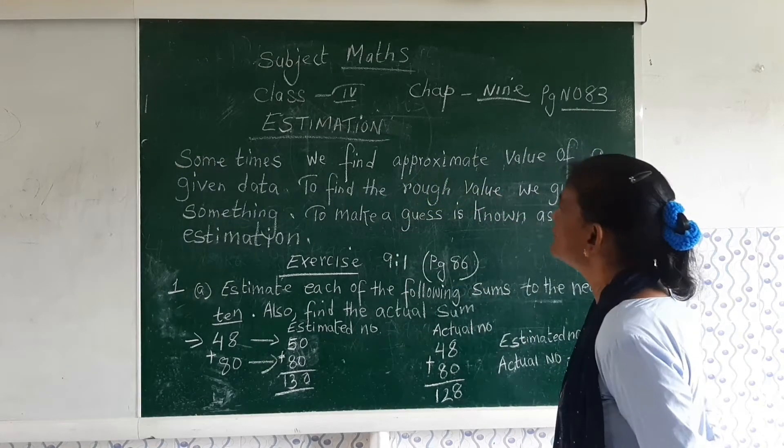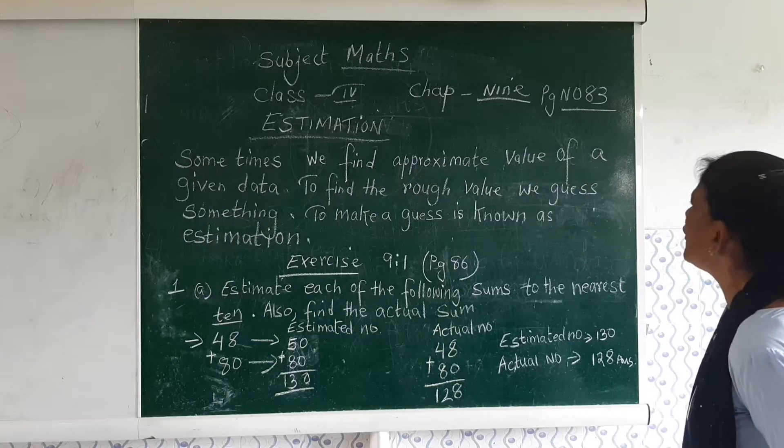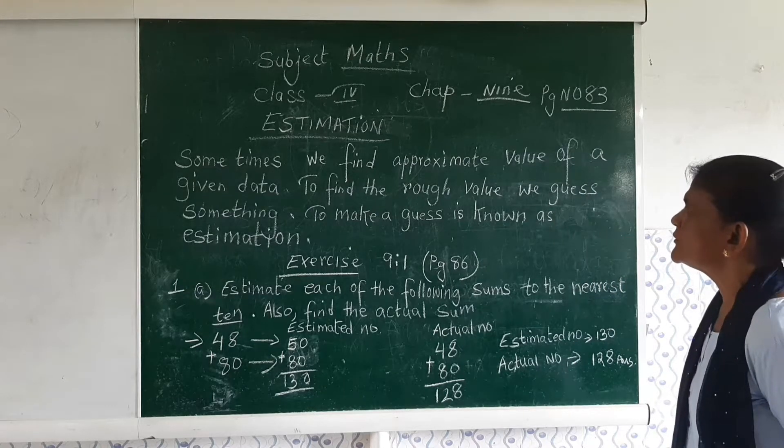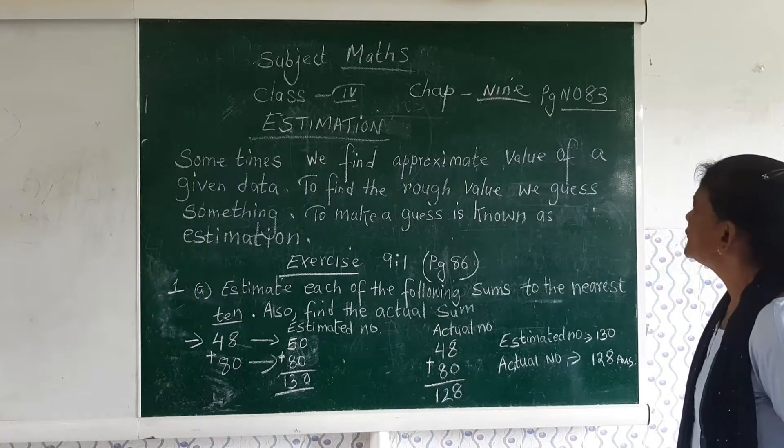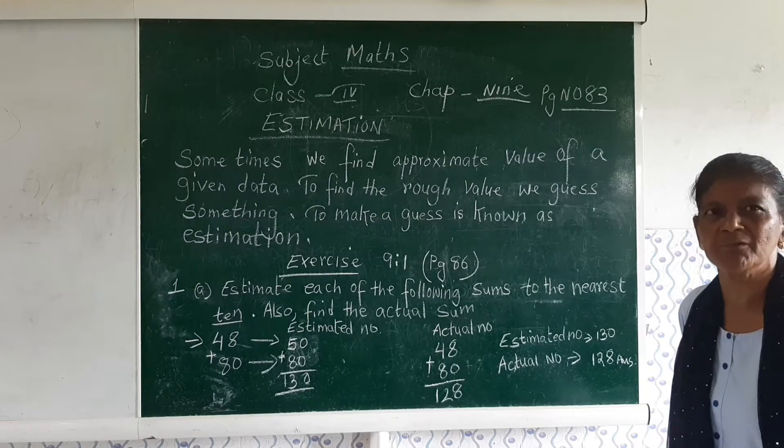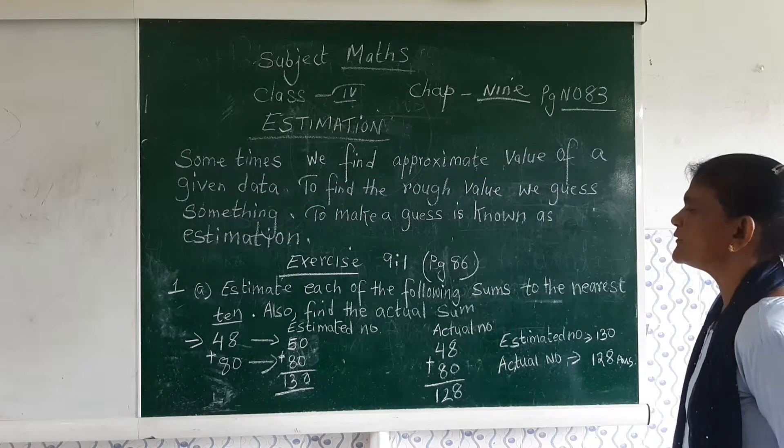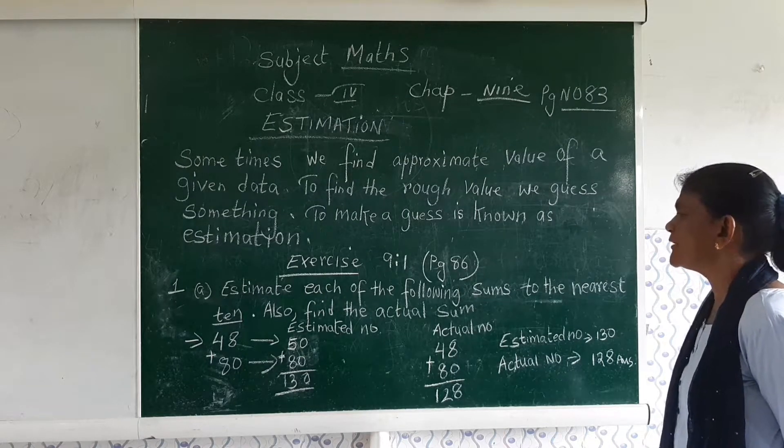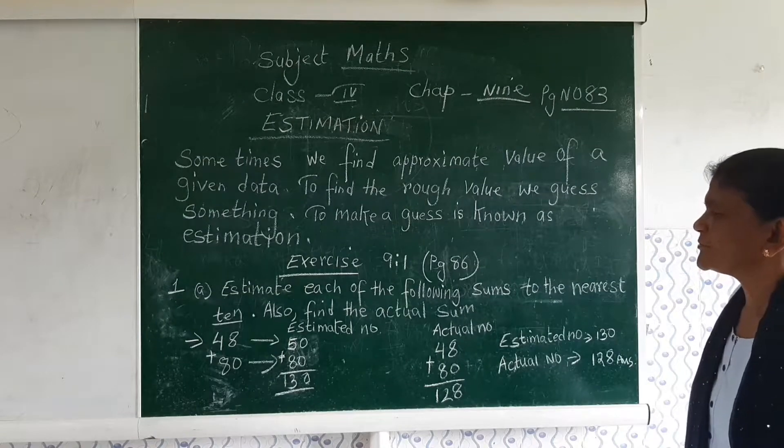Sometimes we find approximate value of a given data. To find the rough value, we guess something. To make a guess is known as estimation. Now let's start our exercise, 9.1 page 86.